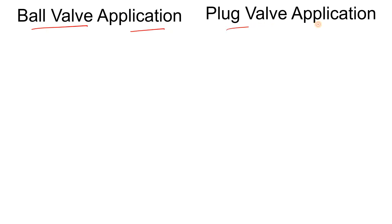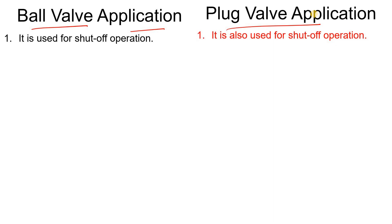Now let's discuss the applications of both valves — ball valve application and plug valve application. As I already told you, both are quarter-turn, rotary type valves. Both valves are used for shut-off operation. In the ball valve, the seat is an elastomer type, so there is a tight shut-off. Both are quick-acting valves and can be used for shut-off operation.